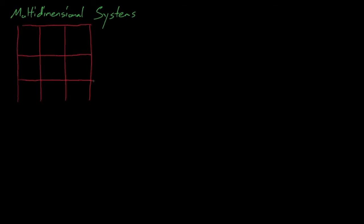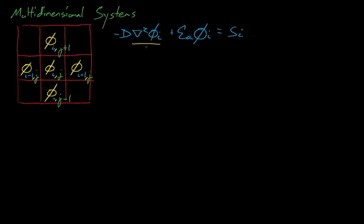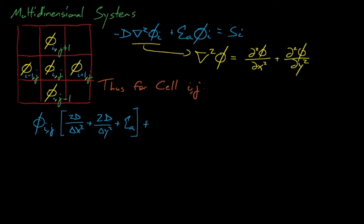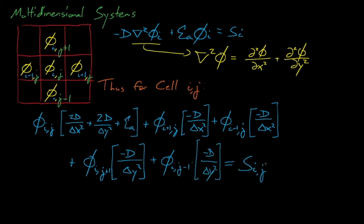Now that we've finished discussing our boundary conditions, let's discuss how to solve these equations for a multi-dimensional system. The short answer is that we solve them exactly the same, except that our gradient contains more terms. For this 2D example, it would contain both an x and y second-order derivative. The i and j directions denote the flux in the x and y dimensions. The Laplacian in the x dimension depends on phi of ij, phi of i plus 1 and j, and phi of i minus 1 and j. The Laplacian in the y dimension depends on phi of i and j, phi of i and j plus 1, and phi of i and j minus 1. When all is said and done, we arrive at an expression which now contains both delta x and delta y terms.